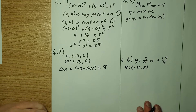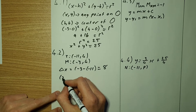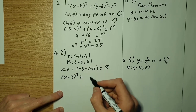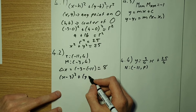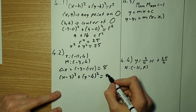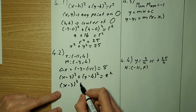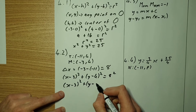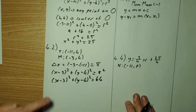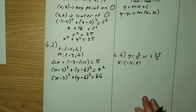Plugging that into your formula, we have: x minus 3 squared plus y minus 4 squared equals 8 squared, giving us x minus 3 squared plus y minus 4 squared equals 64. That's your formula for the big circle.